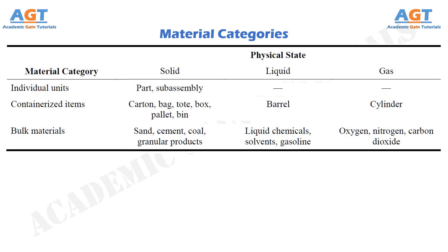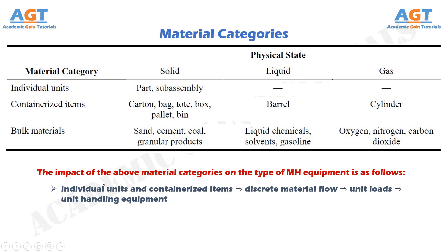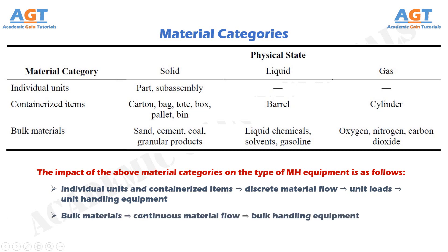The impact of the material category on the type of material handling equipment is as follows. Individual units and containerized items go through discrete material flow — they are handled as unit loads using unit handling equipment. Bulk materials move through continuous material flow using bulk handling equipment.